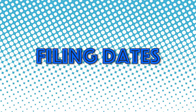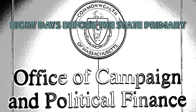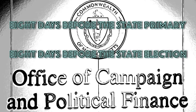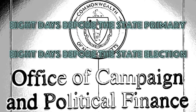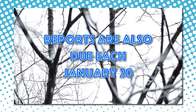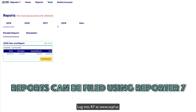During state election years, local party committees file reports eight days before the state primary and eight days before a state election. Local party committees file year-end reports each January 20.